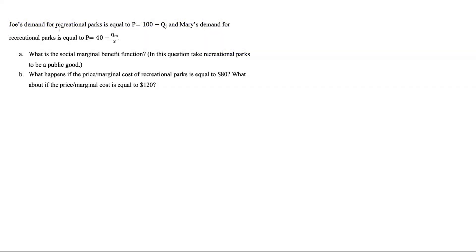Here's the question. Joe's demand for recreational parks is equal to P = 100 - QJ, and Mary's demand for recreational parks is equal to P = 40 - QM/3. In part A we are asked what is the social marginal benefit function, taking recreational parks to be a public good. In part B we are asked what happens if the price/marginal cost of recreational parks is equal to 80, and what about if it is equal to 120. In this video I'll just do part A.